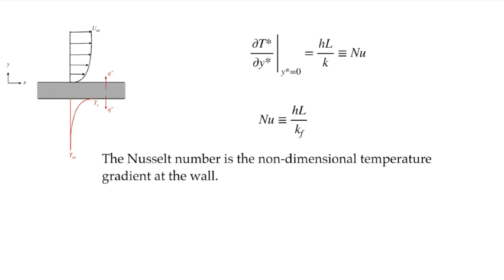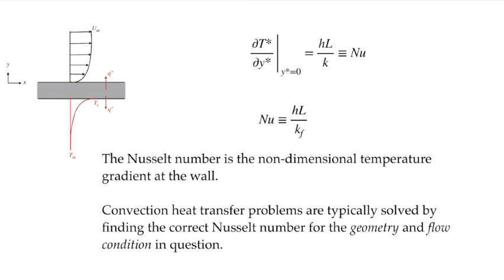The Nusselt number is the non-dimensional temperature gradient at the wall. It represents the heat transfer process from the solid to the fluid or from the fluid to the solid. Convection heat transfer problems are typically solved by finding the correct Nusselt number for the geometry and flow condition in question.